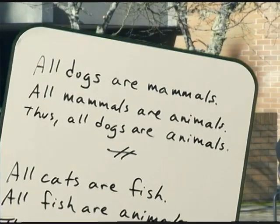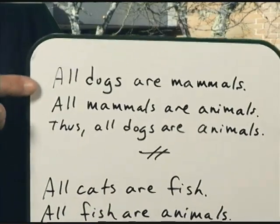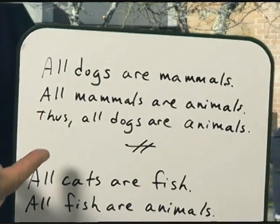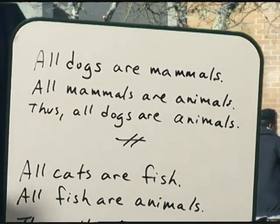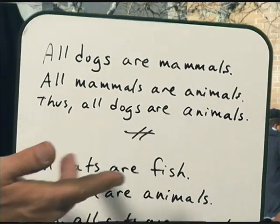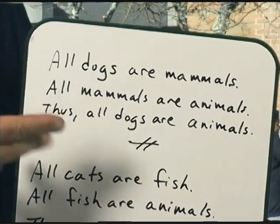Arguments are going to go bad in one of two ways. They've got to be logically good and factually good. That is, the premises of an argument need to give you good reason to believe the conclusion, and those premises need to be true. Here are some examples — I've already got these written up on this little whiteboard. Look at this first argument: All dogs are mammals. All mammals are animals. Thus, all dogs are animals.